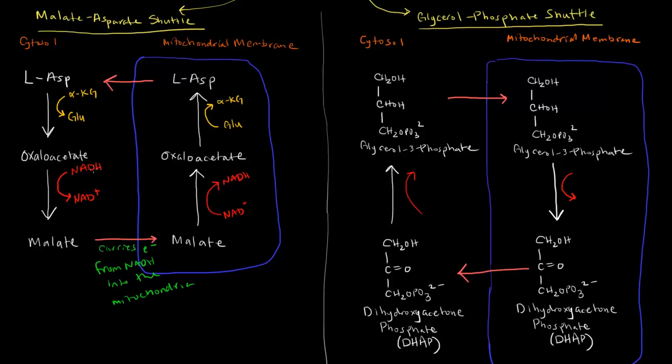So notice what happened here. We took, instead of the NADH directly crossing the membrane because it can't, we need to move its electrons to something that can cross the membrane. Once it crosses the membrane, we reoxidize that, and then we reduce the NAD+ that's already actually in the mitochondria. So we make that NADH.